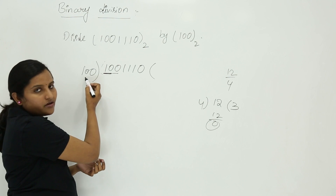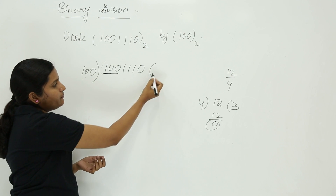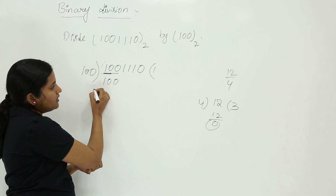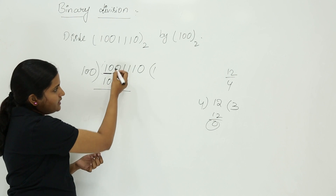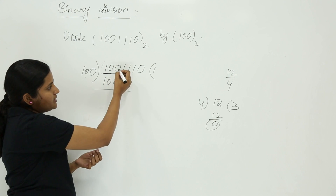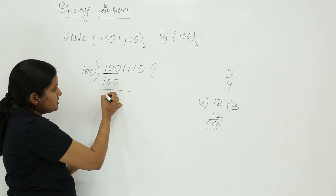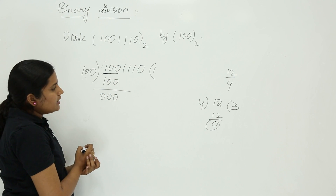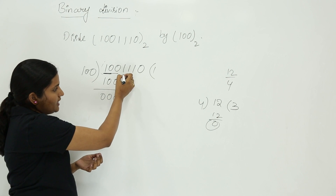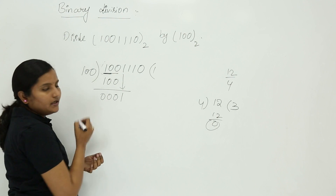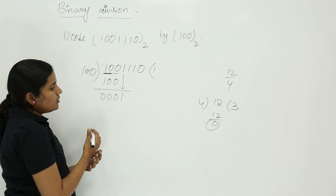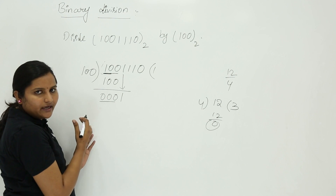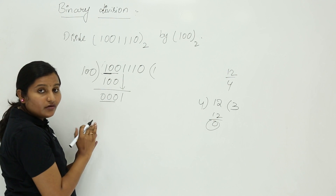Four goes into four one time, so I take one here. The subtraction result is zero: zero minus zero, zero minus zero, one minus one — all zeros. Then you bring down another bit.